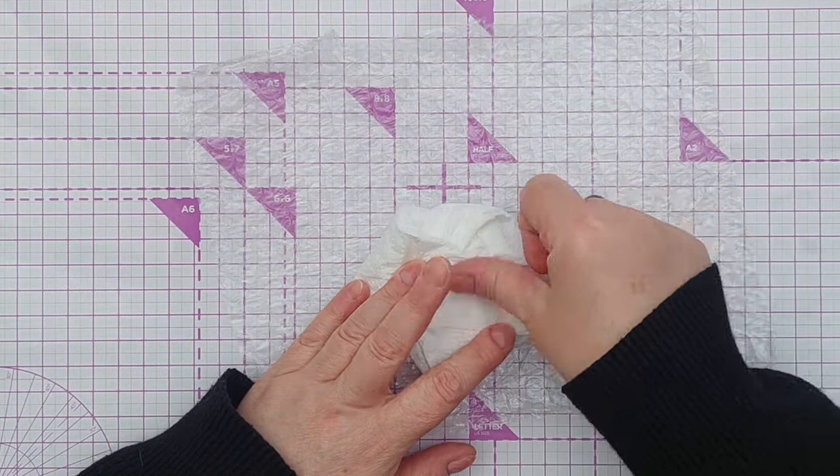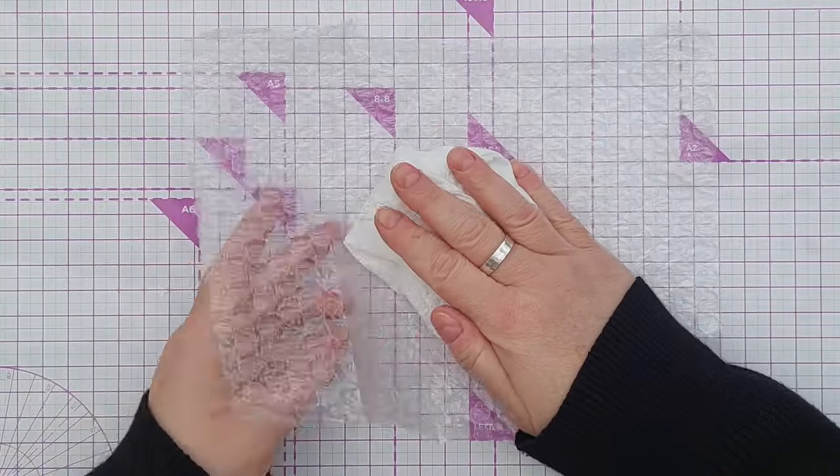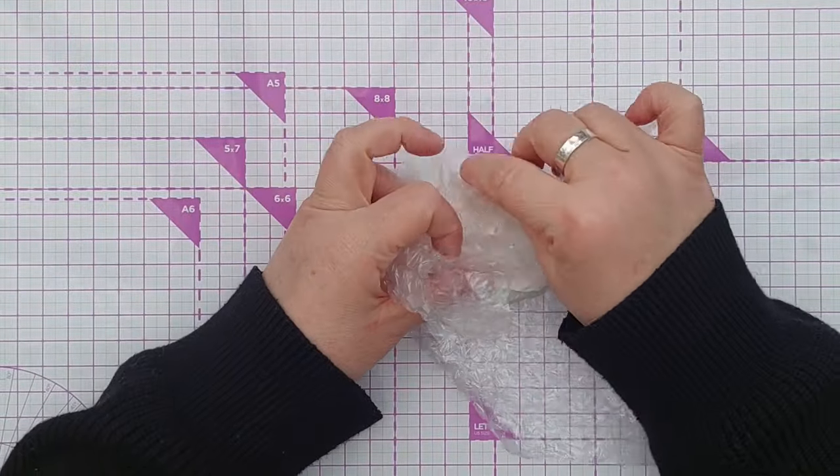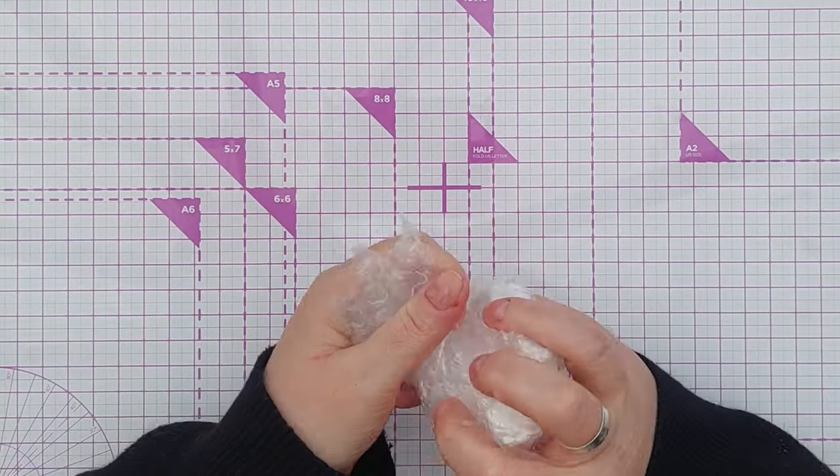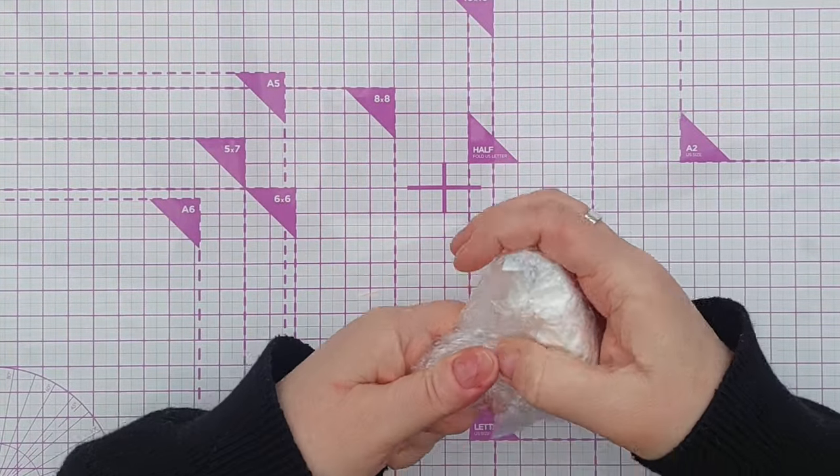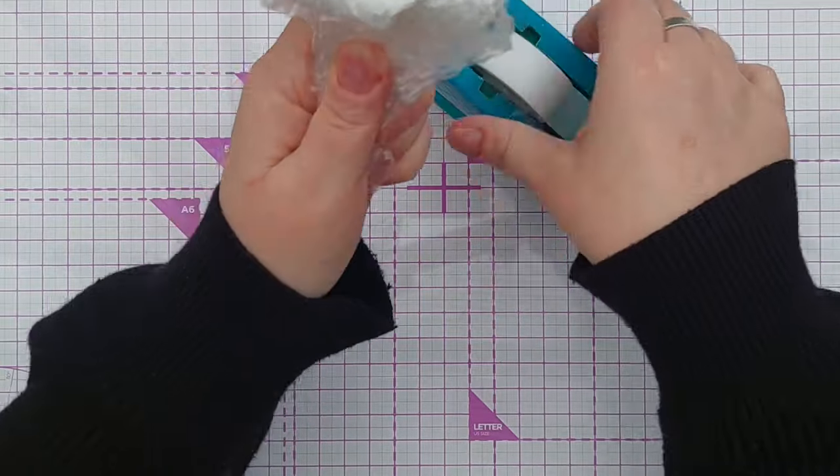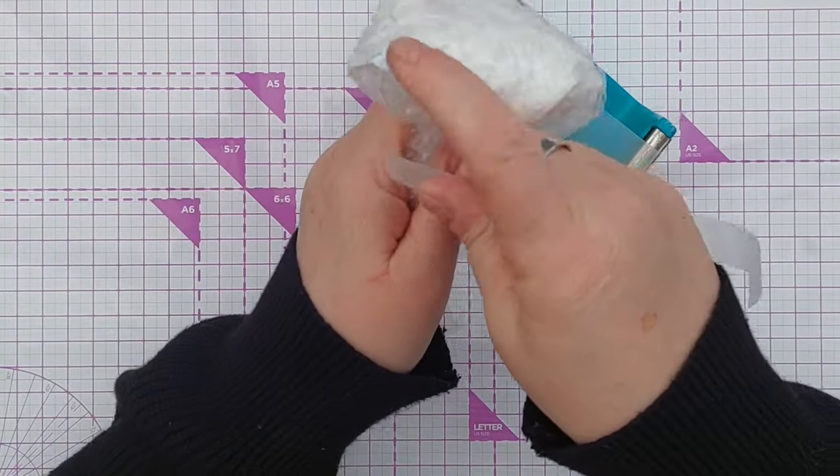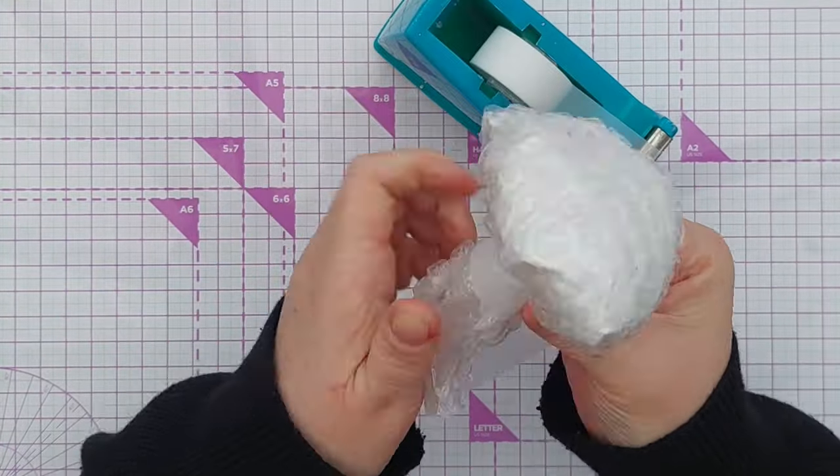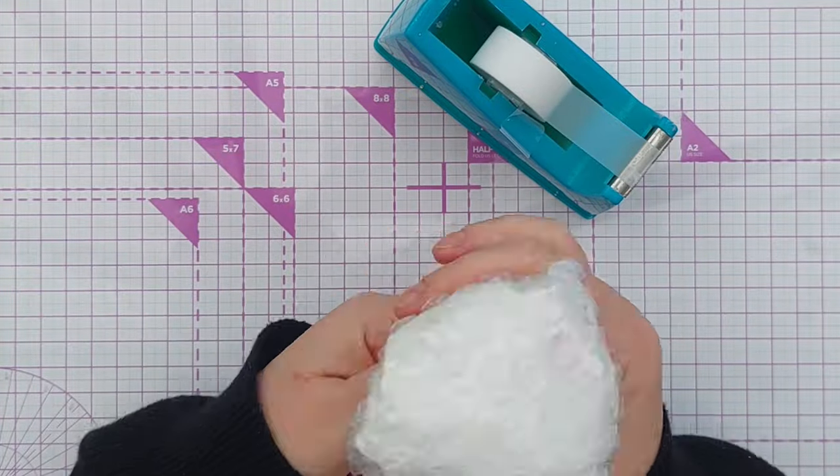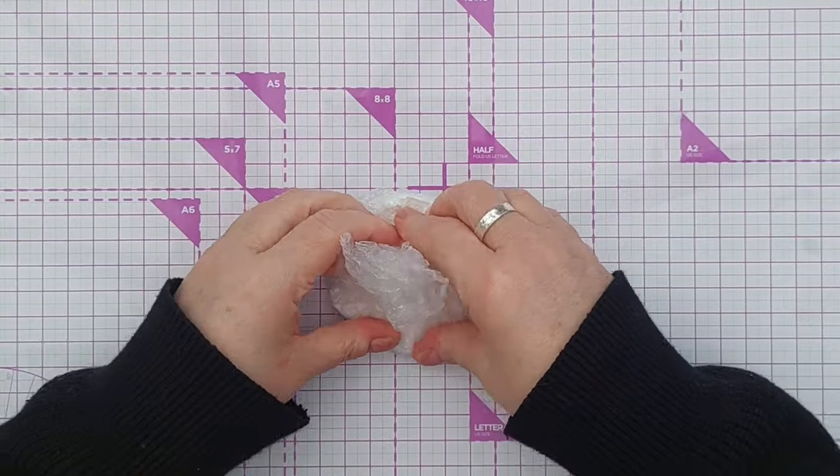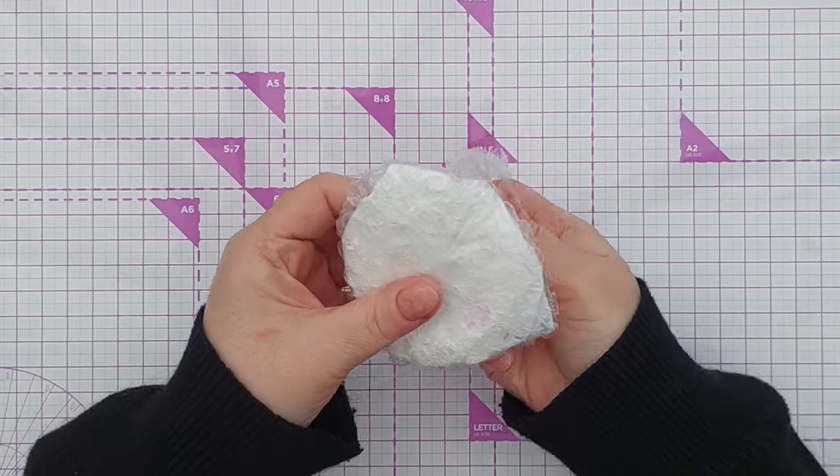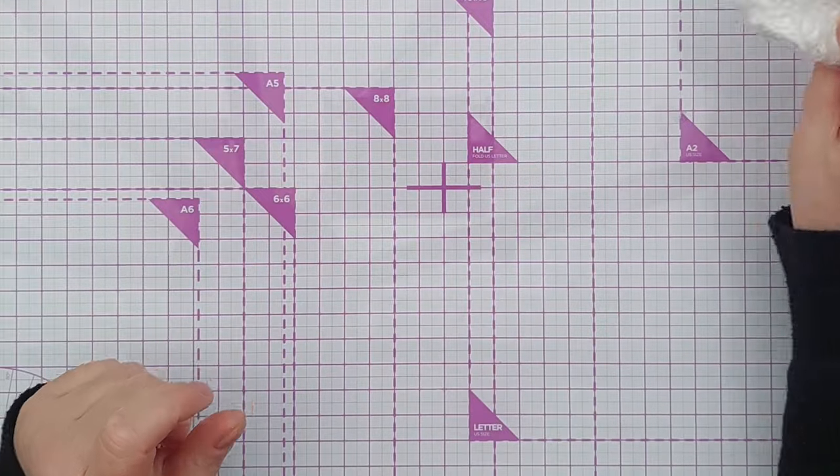Then you can use a bit of tape just to hold that shut like that and then you gather up your bubble wrap to create a handle and you could hold that in place with a hairband but I've just got my tape to hand so I'm going to use that. I'm going to push that down so we'll get a nice flat surface to pick up paint with and smush with.